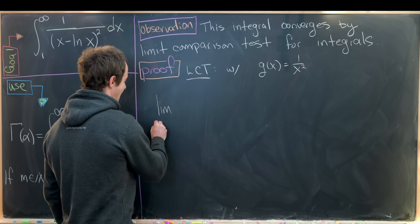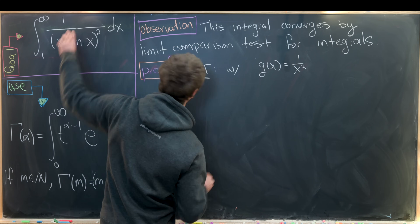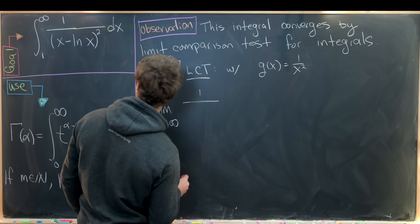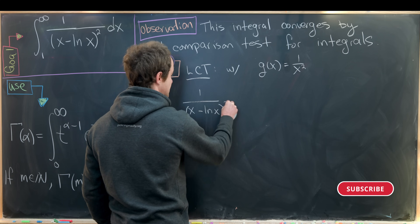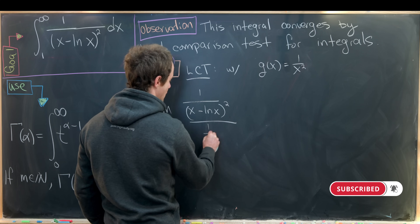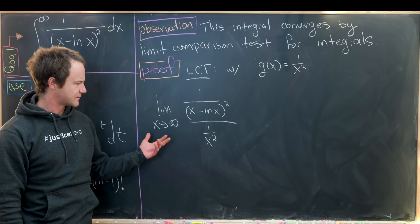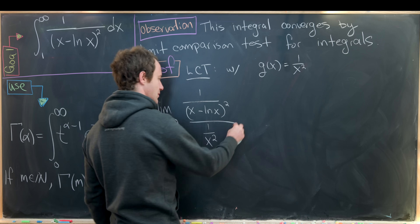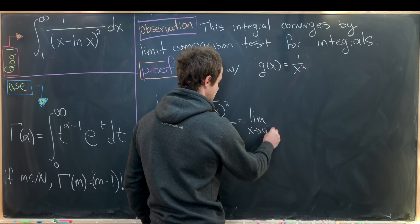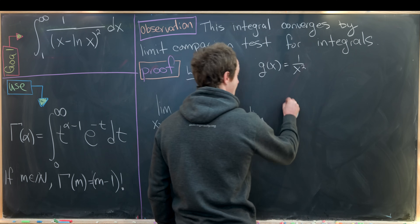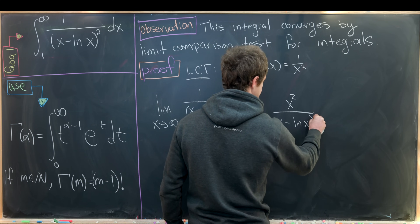We need to take the limit as x goes to infinity of f(x) over g(x). So we have 1 over (x minus ln x)² over 1 over x², which simplifies to the limit as x approaches infinity of x² over (x minus ln x)².